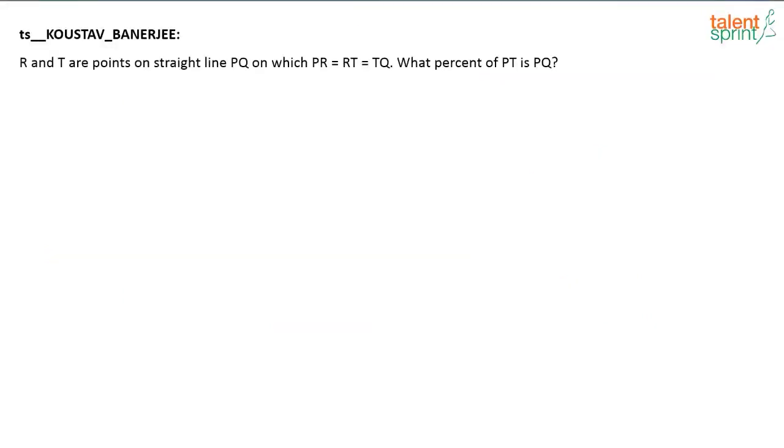This question was posted by Kaustav. R and T are points on a straight line PQ on which PR = RT = TQ. What percentage of PT is PQ? This is a very easy one. There is a line PQ and R and T are points on PQ such that this length PR equals RT equals TQ.